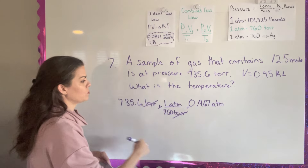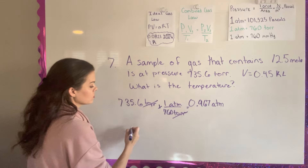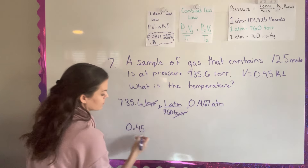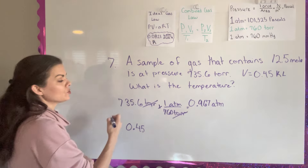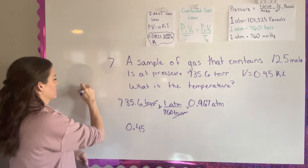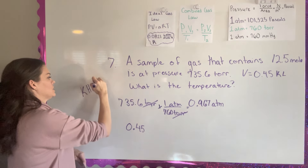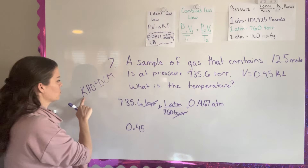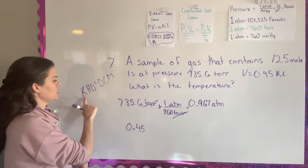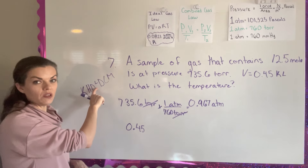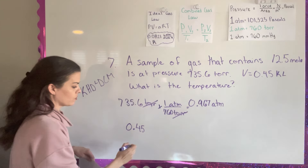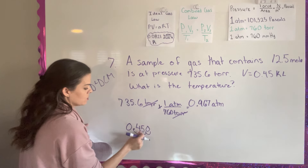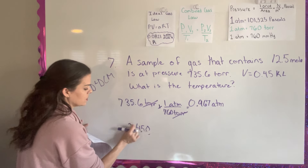Now I'm going to convert volume to liters. If volume is 0.45 kiloliters, using the 'King Herod Died Drinking Chocolate Milk' mnemonic, going from kilo to liter is three jumps in that direction — so it's 450 liters. You may actually have to work that out since we don't frequently go from kiloliters to liters.